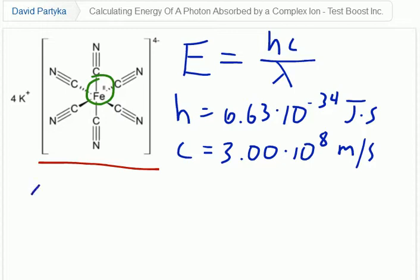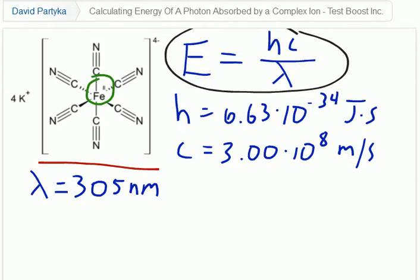The wavelength of the photon absorbed is 305 nanometers. We recall the relationship between energy and wavelength, which is an inverse relationship. E is equal to hc over lambda, where h is equal to Planck's constant, 6.63 times 10 to the negative 34 joule seconds, and c is the speed of light, 3.00 times 10 to the eighth meters per second.